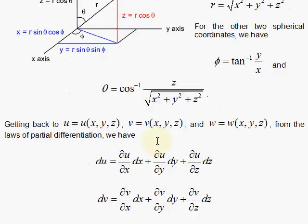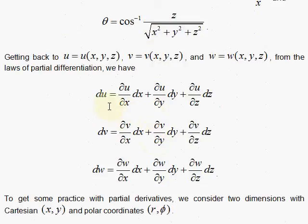All right, so here would be your general transformation from x, y, and z to some new coordinate system u, v, and w which are functions of x, y, and z, and now we have the idea of the partial derivatives again as we look at a three-dimensional transformation.